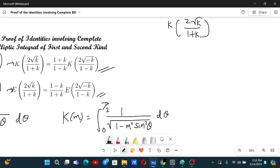From the definition, we know that this is integral from 0 to pi by 2 of 1 by root under 1 minus m square. M square is 4k by 1 plus 2k plus k square times sin square theta d theta.